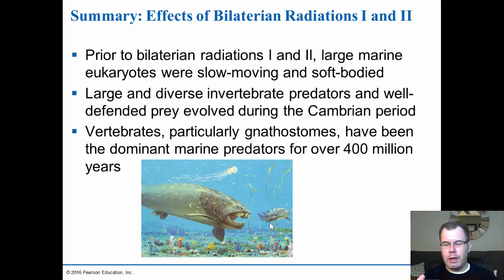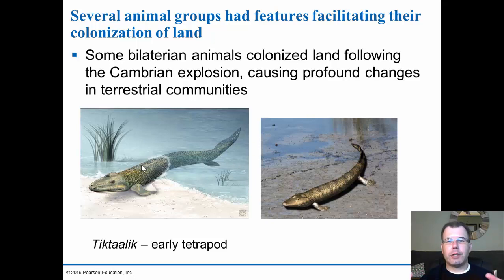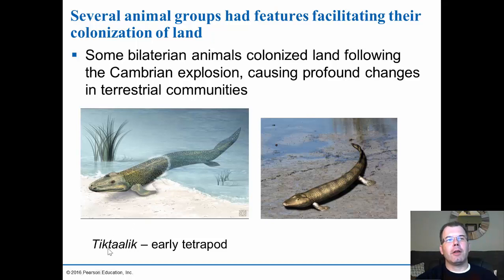So we have the cartilage fish (chondrichthyans) and then the osteichthyans with the bony fish as the predators they are today. Several groups facilitated colonization onto land. During the Cambrian explosion with the invertebrates, quite a few organisms came onto land and diverged at the same time — we also saw this in the vertebrate animals. The biggest ancestral tetrapod we know of was the lungfishes, and specifically the Tiktaalik — the fossil ancestor of the lungfish which actually comes onto land and can breathe air.